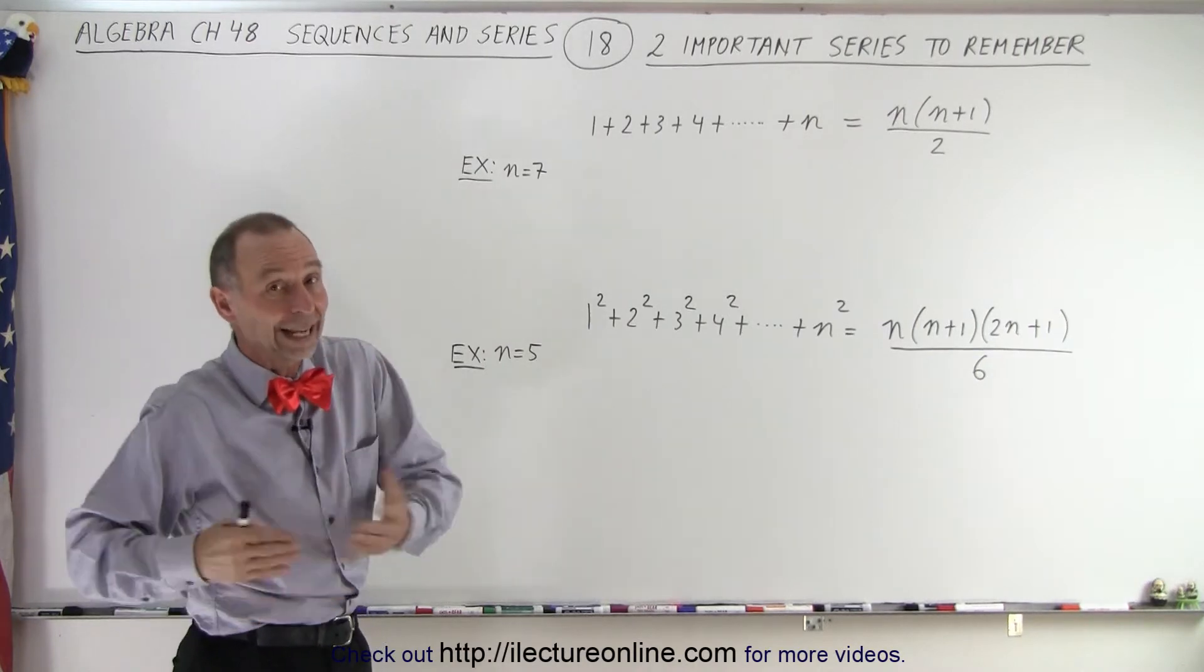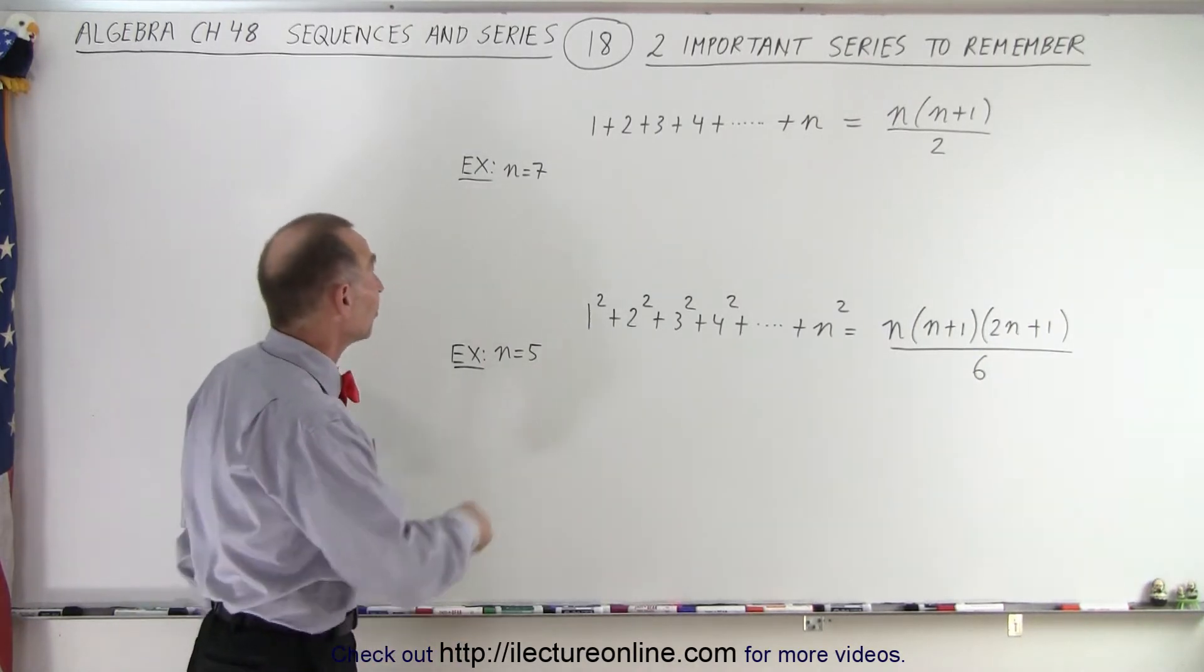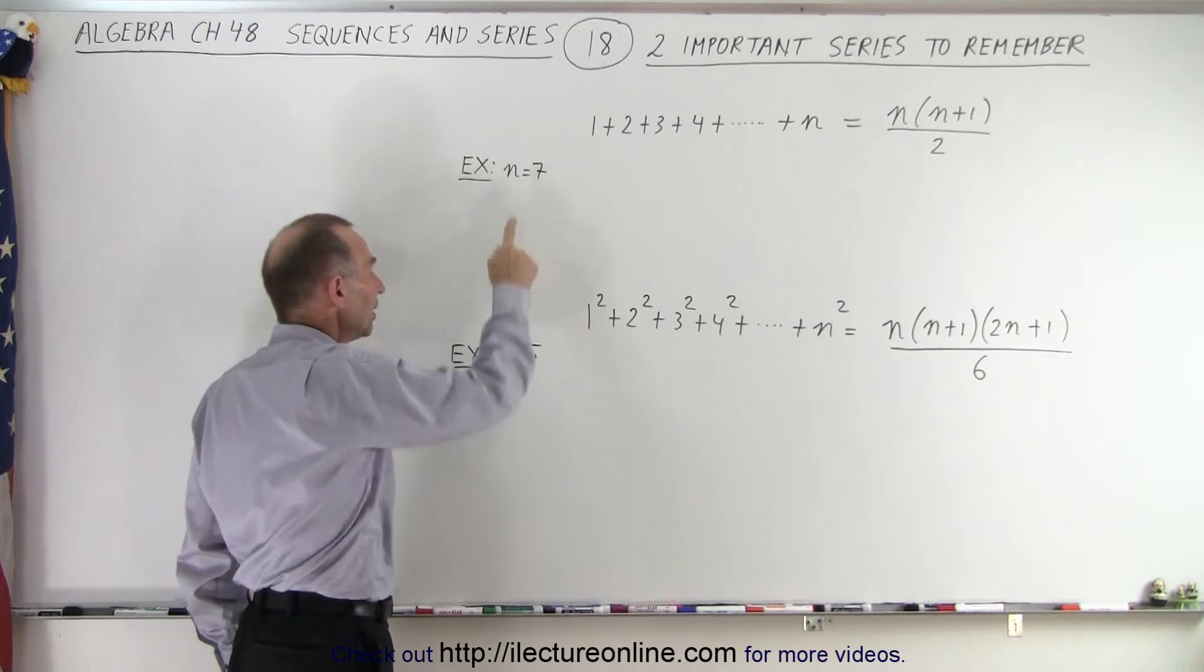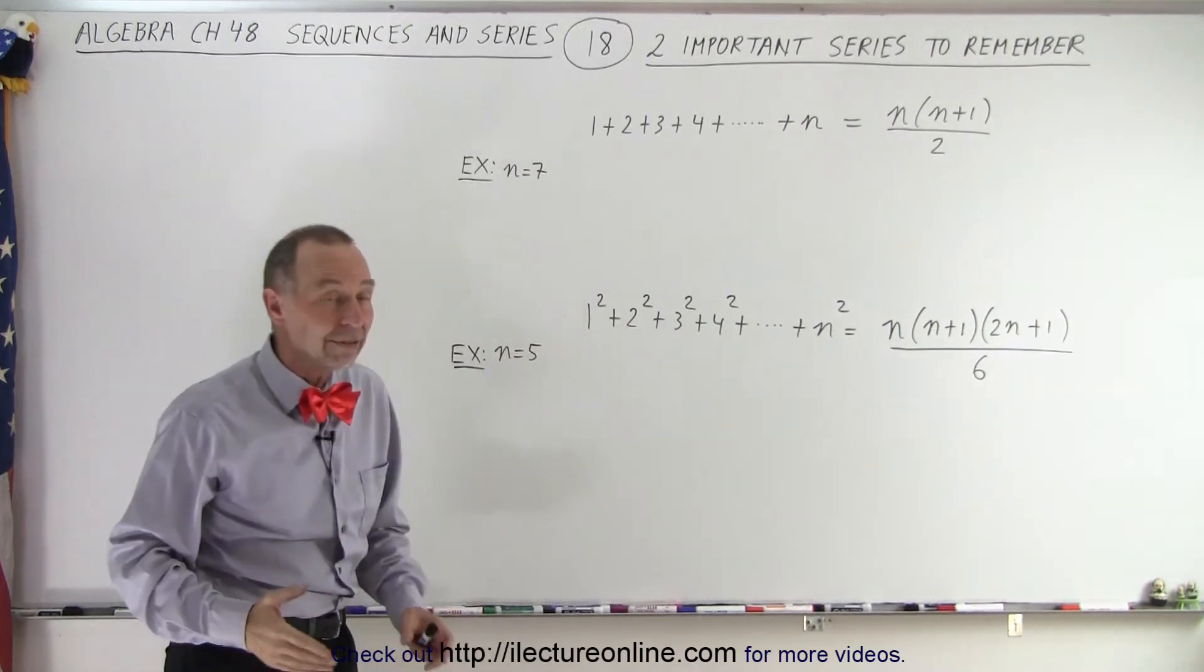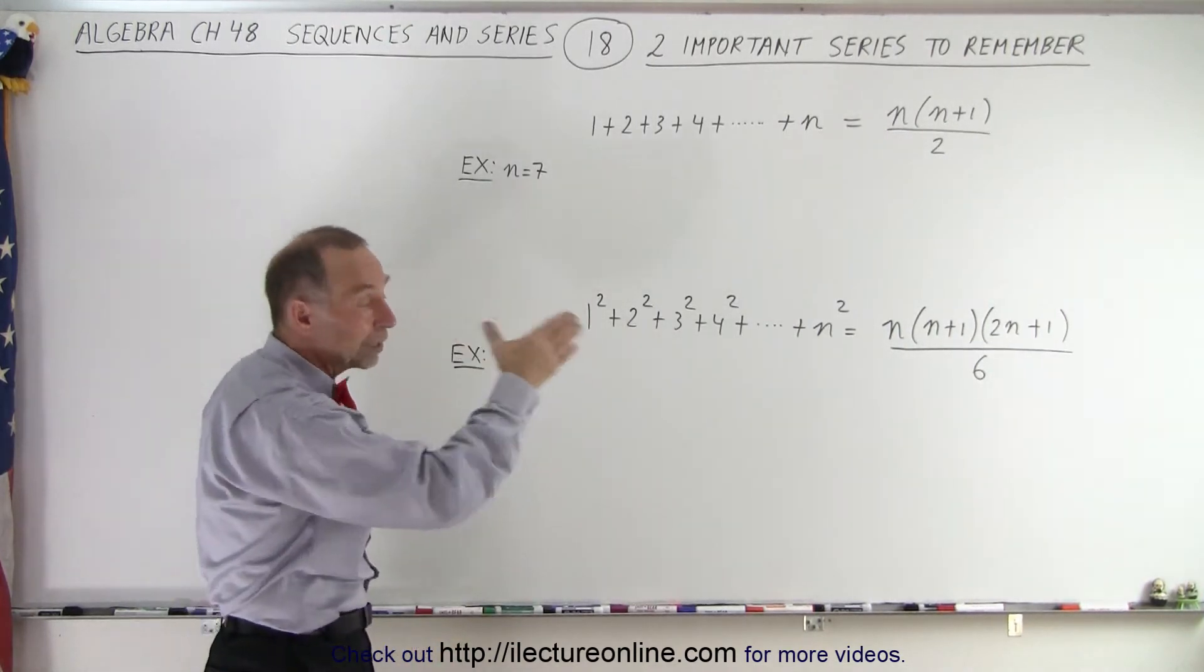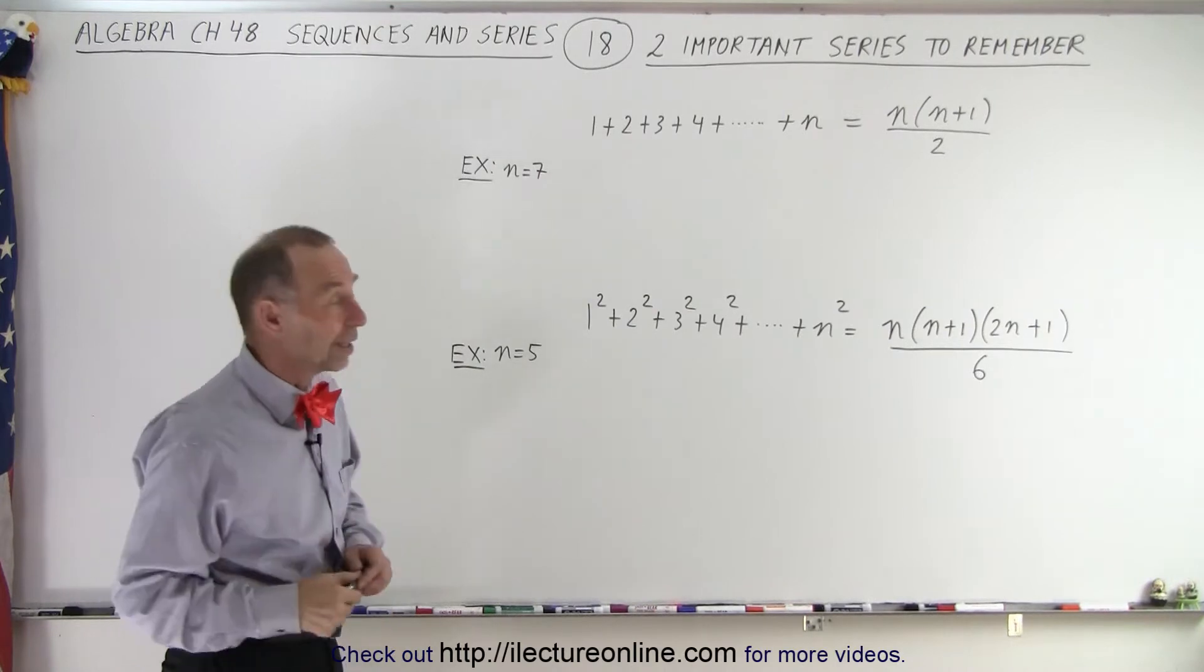But now we're going to show you that it actually works by using some examples. Here we're going to let n equals 7. Here we're going to let n equals 5, and you'll find that the left side will indeed equal the right side. So let's try that.